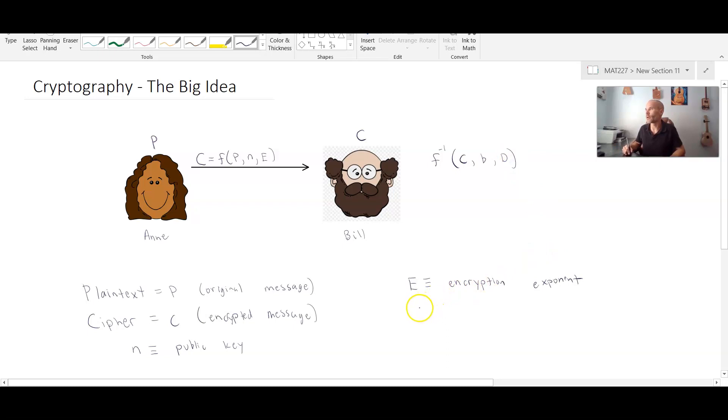Now c we already know is the cipher text. b is what we call defined to be the private key. So Ann had the ability to lock the box, but Bill is the only one that can unlock the box. And the value of d is actually called the decryption exponent because it will undo what the encryption exponent has done.